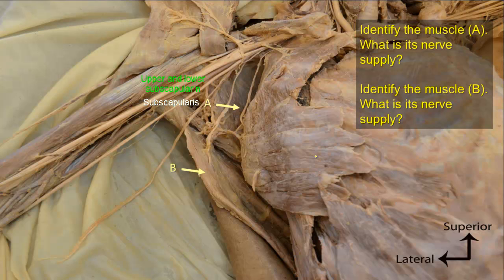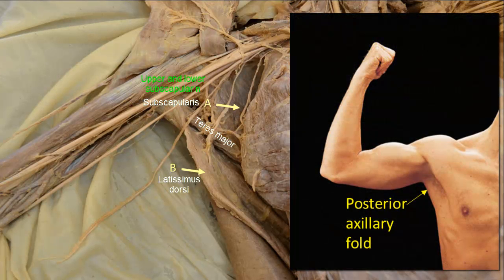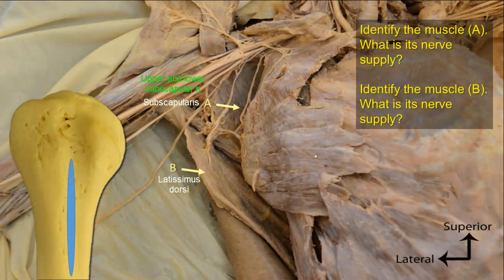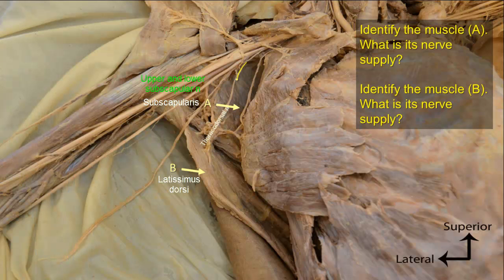Identify muscle B — what is its nerve supply? Muscle B is the latissimus dorsi muscle. This is the lateral border of latissimus dorsi, and the wide muscle in the back converges here to form a strong ribbon-like tendon that wraps around the lower border of teres major muscle, both forming the posterior axillary fold. The tendon of latissimus dorsi is attached to the floor of the intertubercular groove of the humerus.